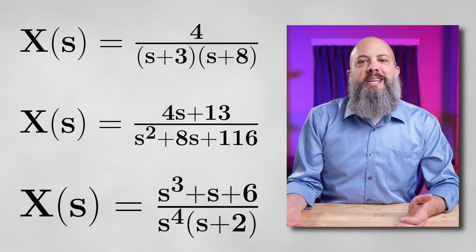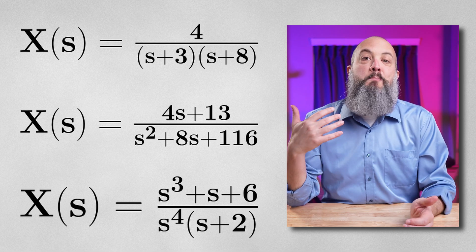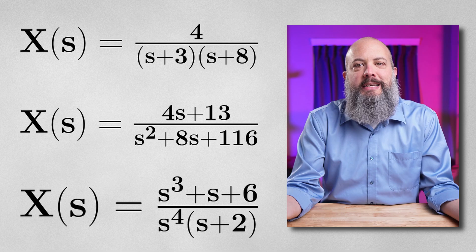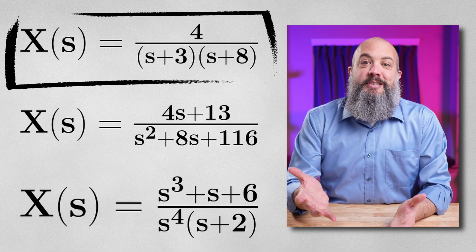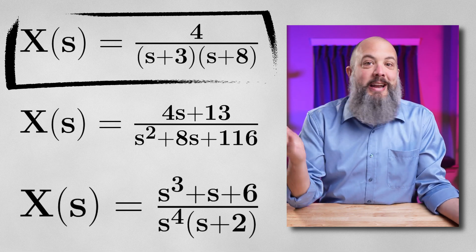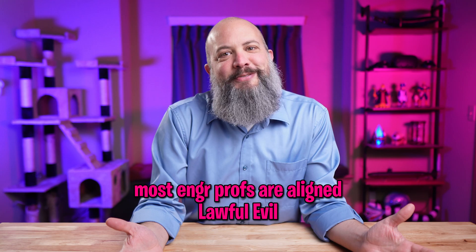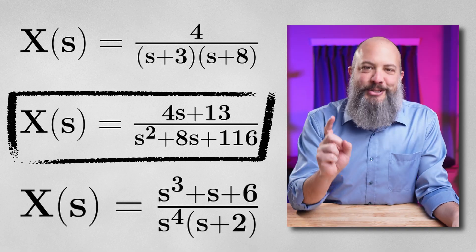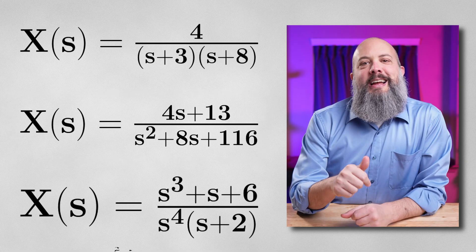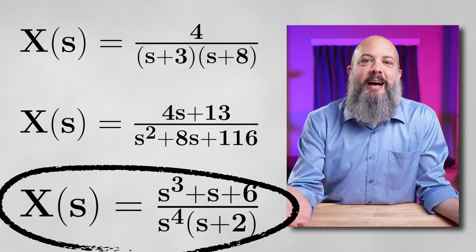Three partial fraction decomposition example problems fully worked out, showing the three most common cases you're going to see in an engineering class. Problem one has the factorization in the denominator already completed, which means your professor was very nice, and you're probably never going to see this case very often. Problem two has factoring still required in the denominator, and problem three has repeated roots or repeated factors in the denominator.